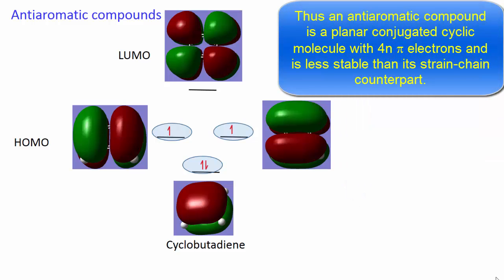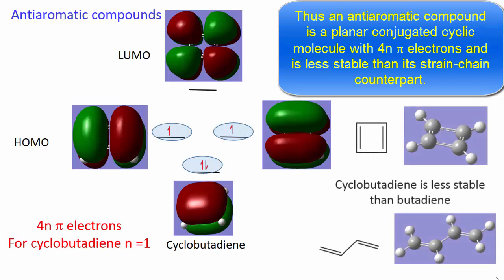Thus, an anti-aromatic compound is a planar conjugated cyclic molecule with 4n pi electrons, and is less stable than its straight chain counterpart.